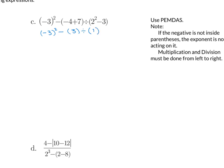Now we want to do our exponent. Note the negative is inside parentheses, so the exponent is acting on the negative. We get negative 3 squared is 9, minus 3 divided by 1. We multiply and divide from left to right, so we're going to divide: 3 divided by 1 is 3. Then we do our additions and subtractions: 9 minus 3 is 6.